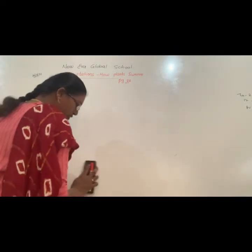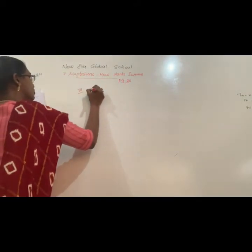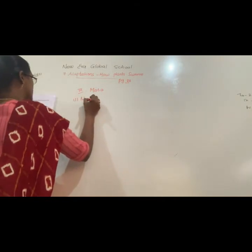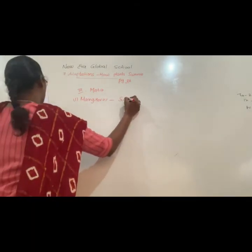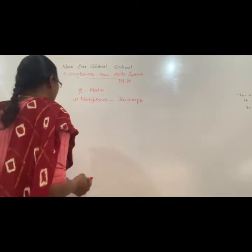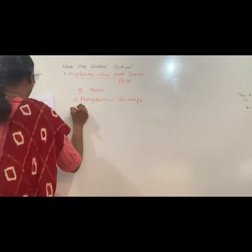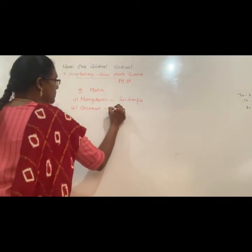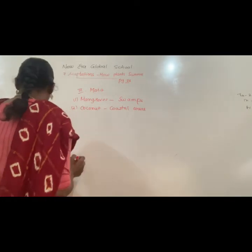Now come to the next one: match the following. First one — mangroves: where do mangroves grow? Mainly in swampy areas, mark option D — swamps. Second one — coconut: where does coconut grow? Mainly in coastal areas, that is option number five.